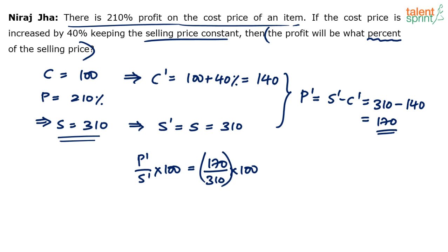Remember, it is customary that the profit is usually calculated on cost price. In general, it is calculated on cost price. But in this particular question, very clearly, he had specified that the profit should be taken on the selling price. Profit is what percentage of the selling price?